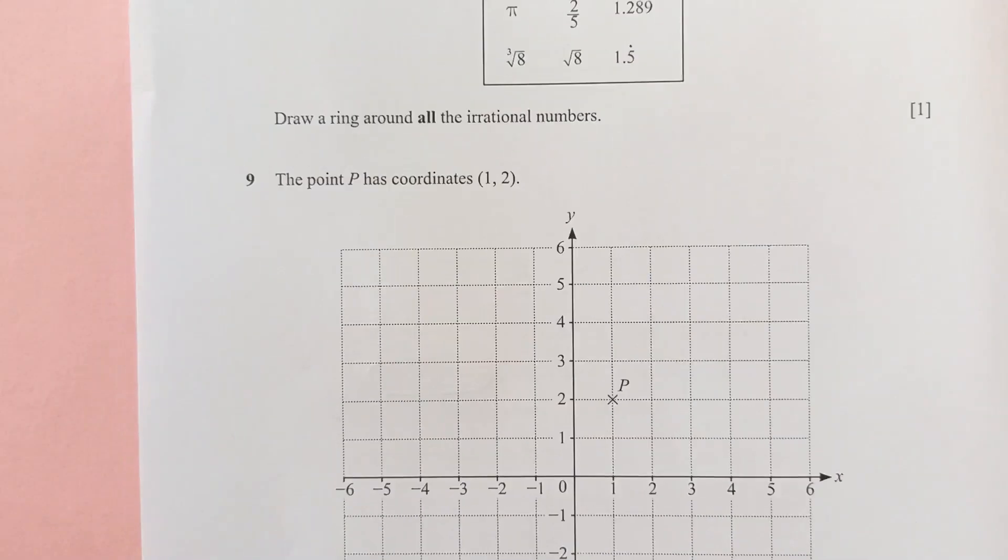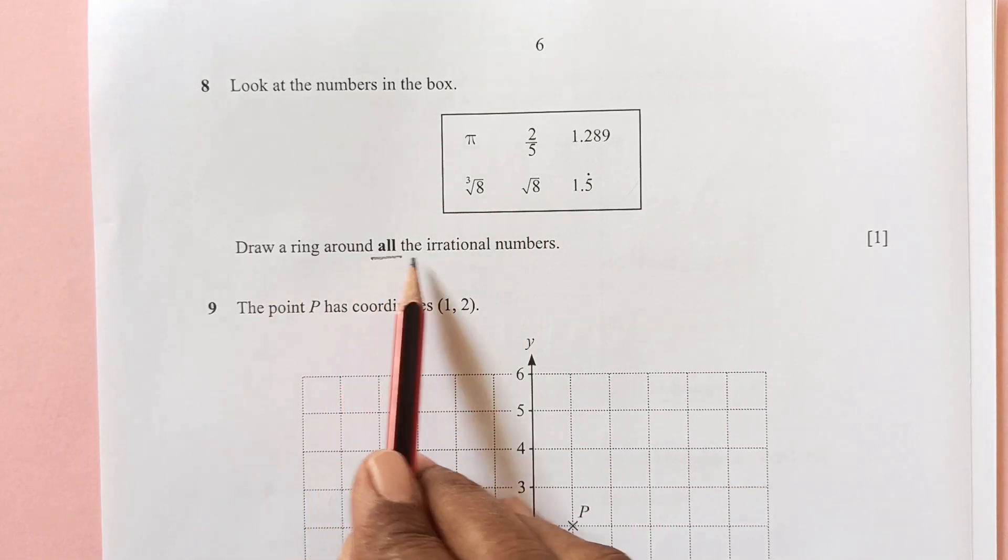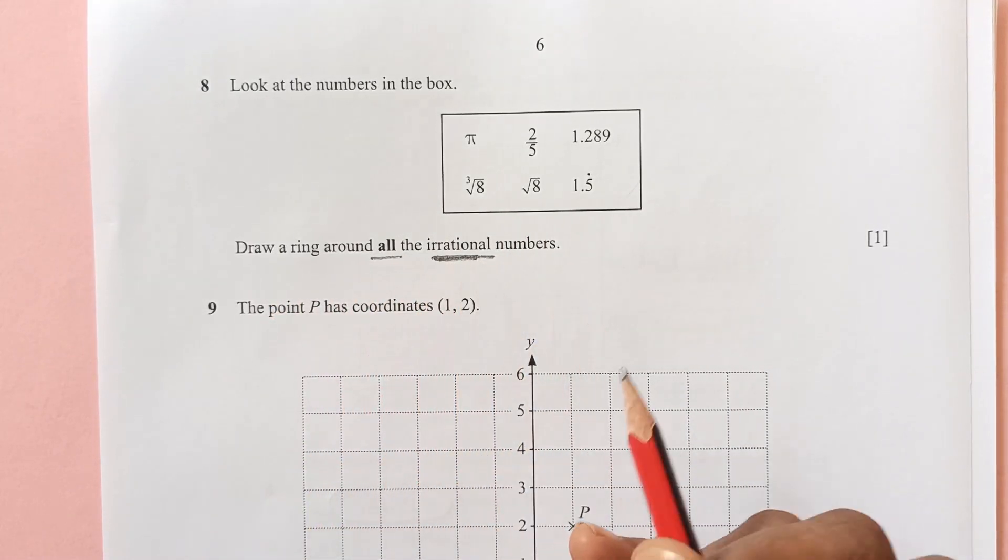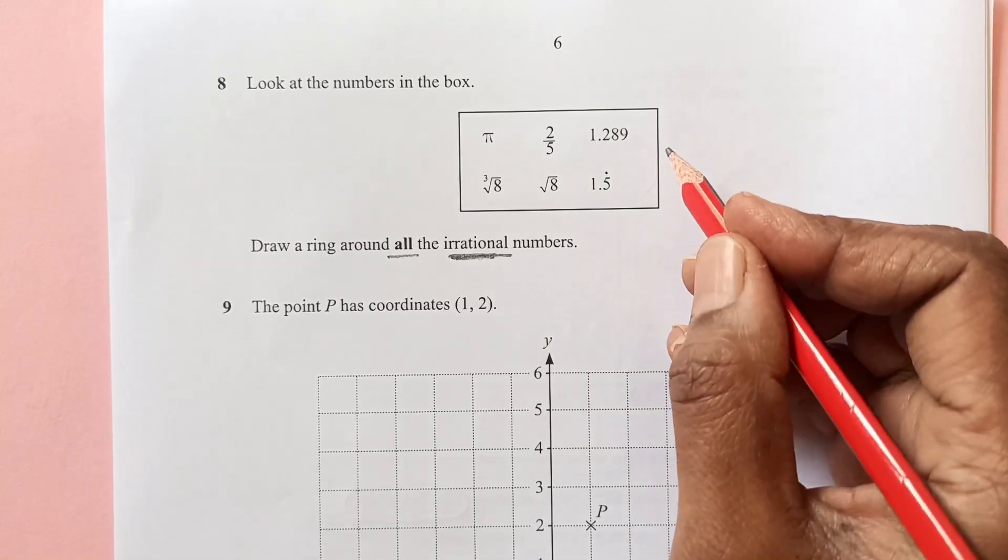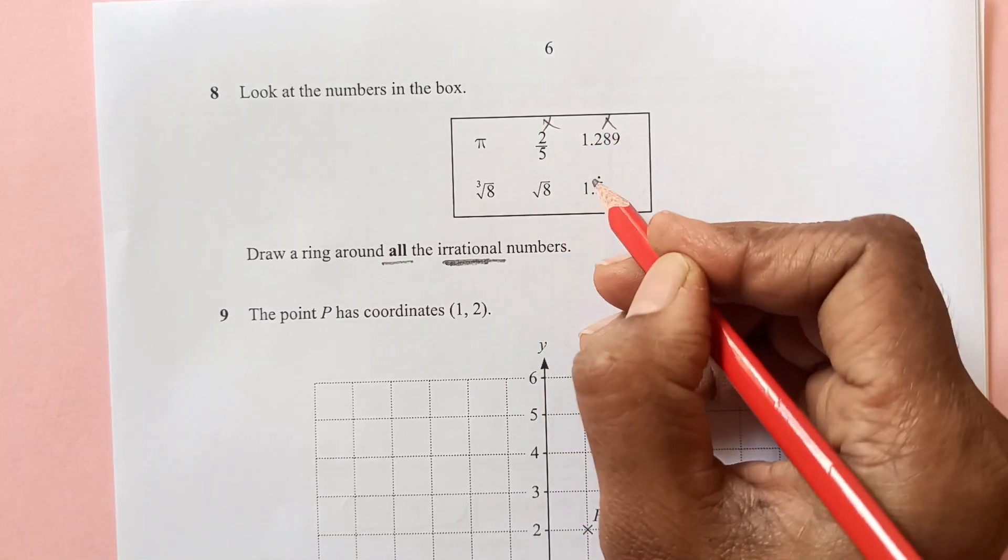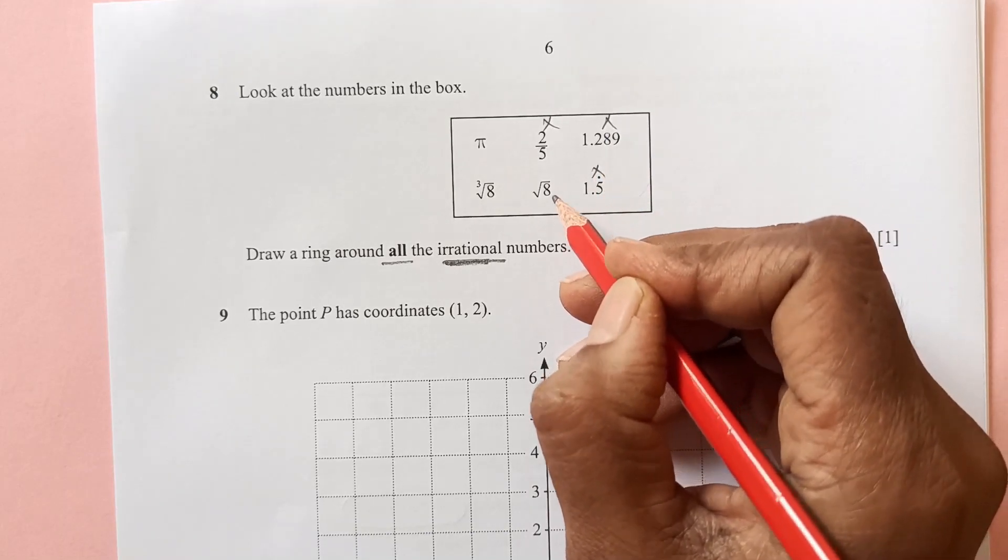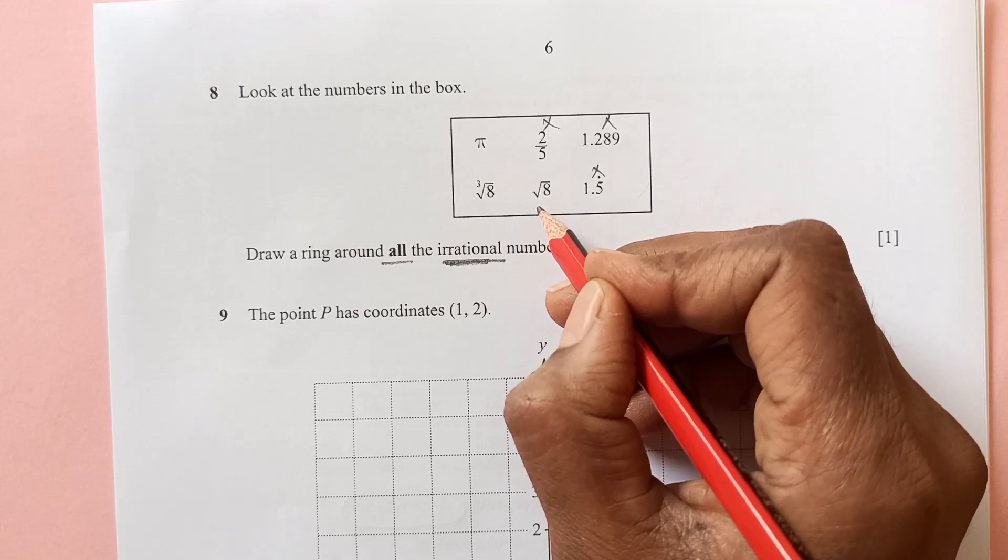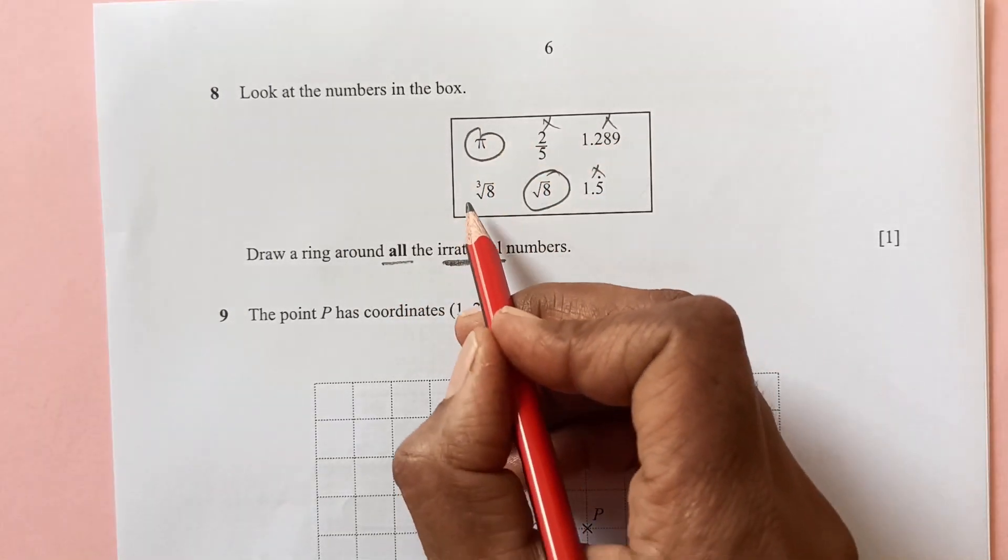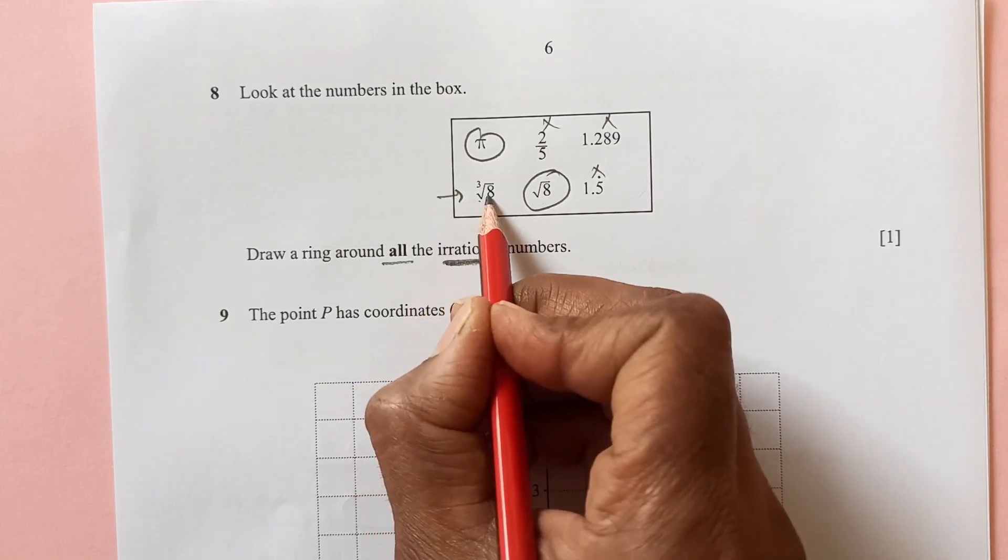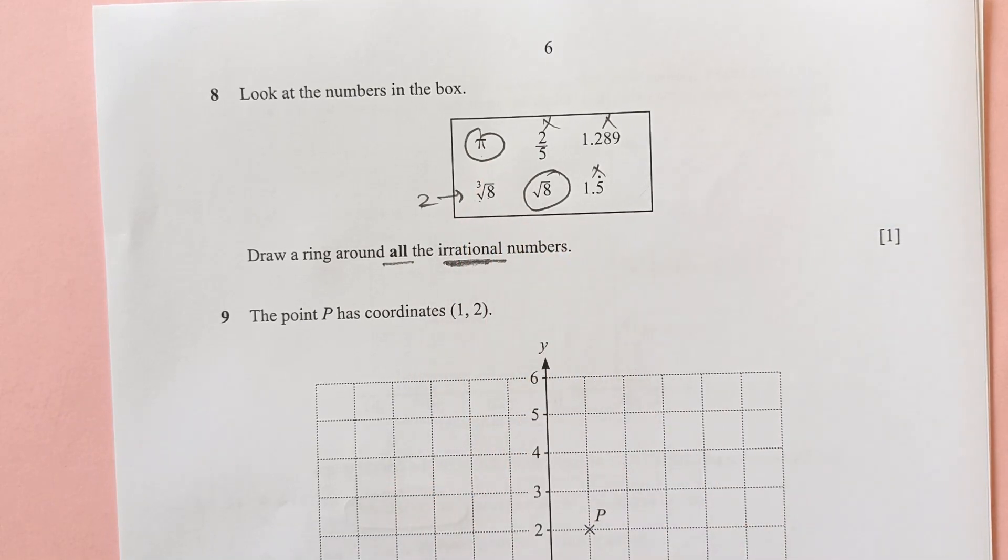Question 8. Look at the numbers in the box. Draw a ring around all the irrational numbers. Irrational numbers are the numbers that cannot be represented as a fraction. This is not the answer, this is not the answer, this can be converted also. Square root 8 will be an irrational number, and pi is also an irrational number. Cube root is not because cube root of 8 is 2, that is a whole number. So you will have only pi and square root 8.